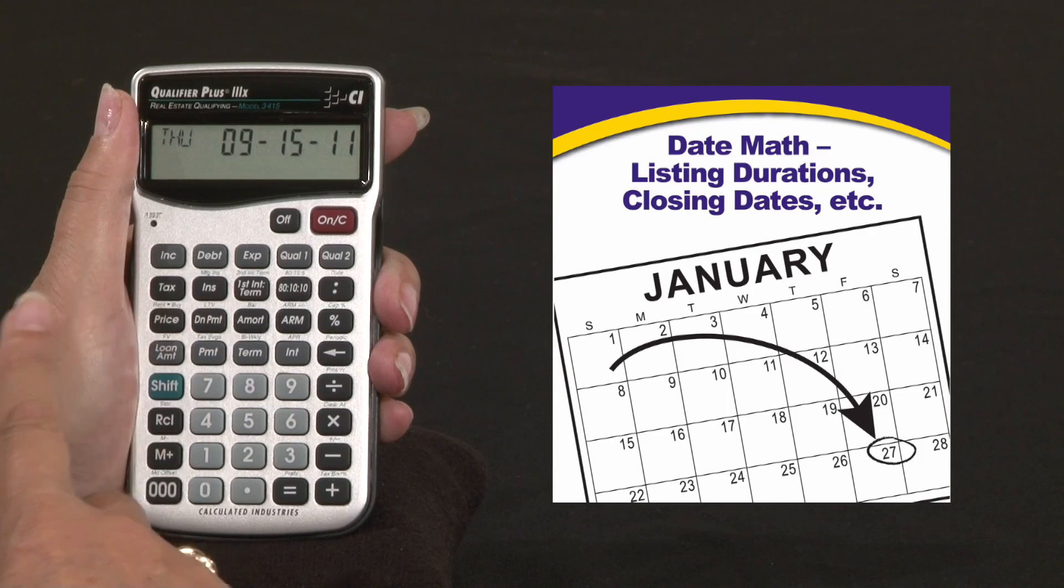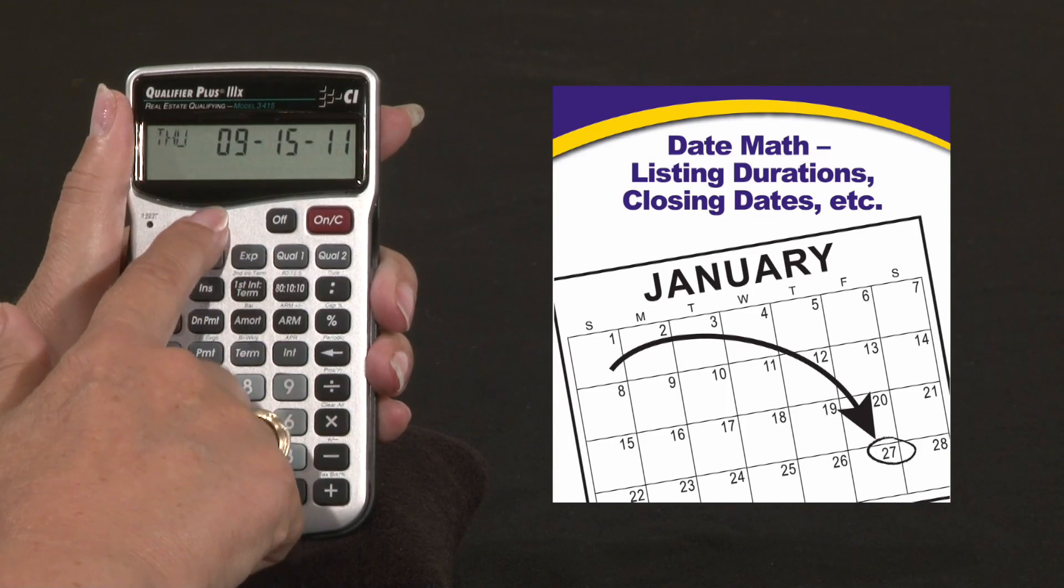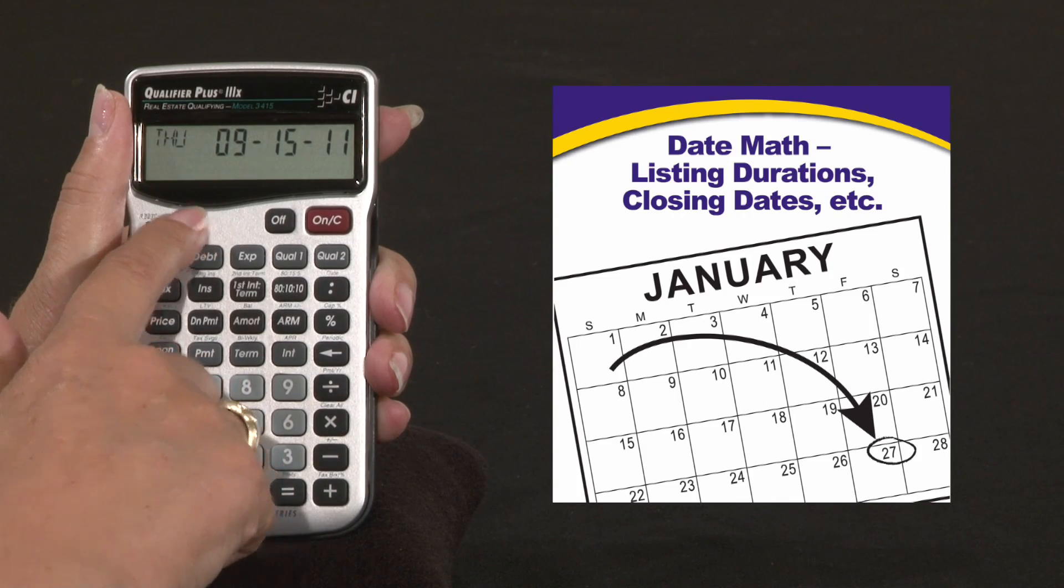Or we can show the difference between two dates. So we can enter, we can use our future date, which is right here, it's in September.